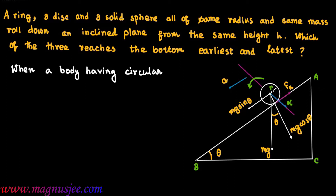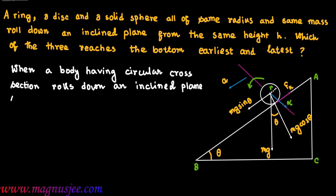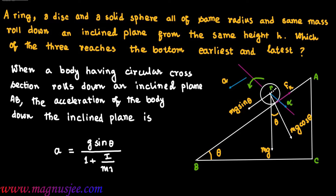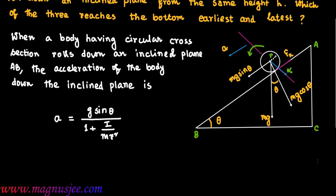As shown in the diagram, a body is placed on an incline plane and rolls down it. When a body having a circular cross section rolls down incline plane AB, the linear acceleration of the body down the incline plane is given by: A = g·sinθ / (1 + I/MR²). This is equation 1.